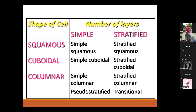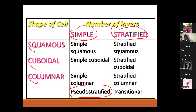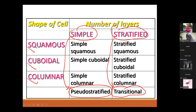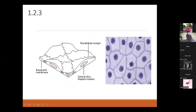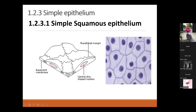This is a summary table of epithelial tissues. We have simple and stratified classifications, with squamous, cuboidal, and columnar shapes. There is also another type of epithelial tissue classified under stratified: transitional epithelial tissue.